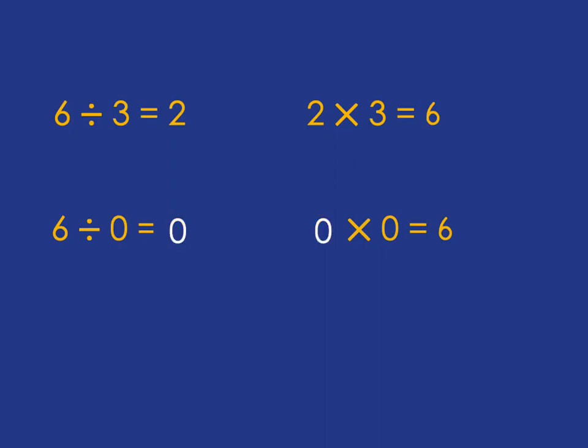Maybe it's 0. Well, is 0 times 0 six? No. Maybe the answer to 6 times 0 is 6. Well, is 6 times 0 six? No. Nothing that we can put in. No number times 0 is going to give you 6. And that's why 6 divided by 0 is undefined.